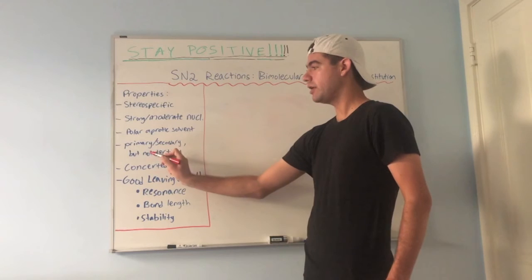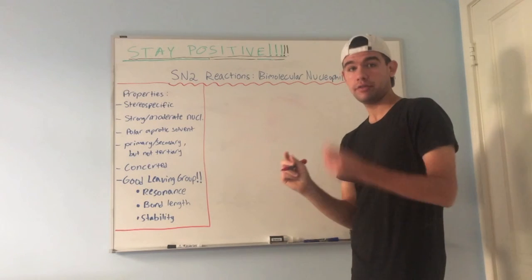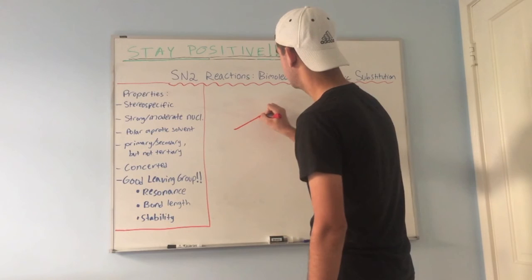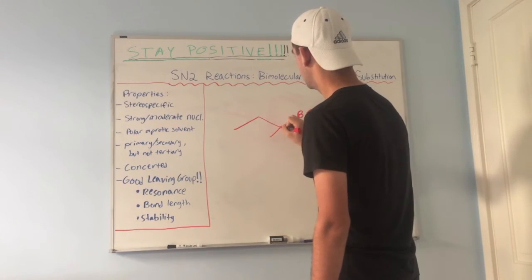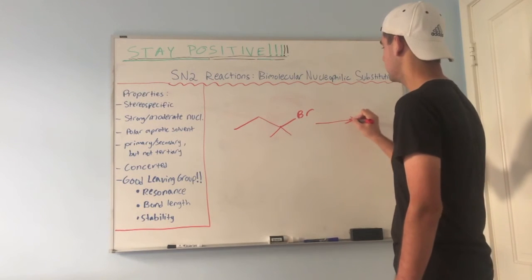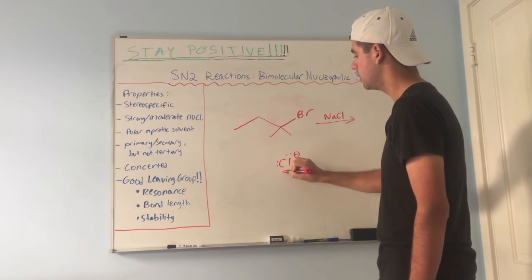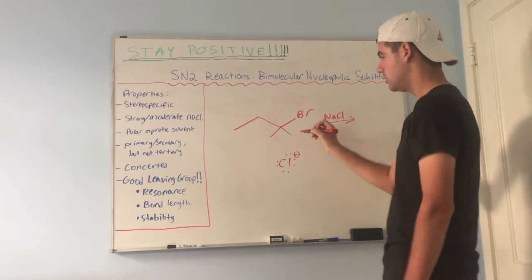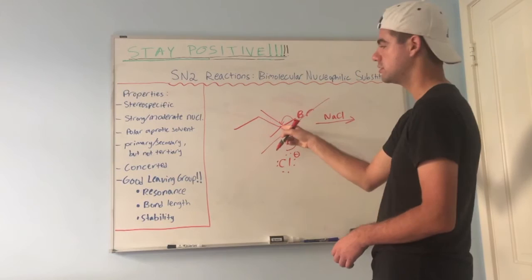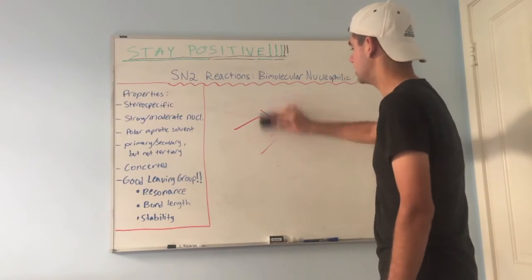SN2 works on primary and secondary substrates, but not tertiary. For a reaction to happen via SN2, the electrophilic carbon cannot be attached to three other carbons — it must have two or fewer. For example, if a carbon is tertiary — attached to a CH3, another CH3, and a CH2 group — a chloride ion will not attack it because there's simply not enough space; it's too cluttered. SN2 will not happen if the carbon is tertiary, only primary or secondary.